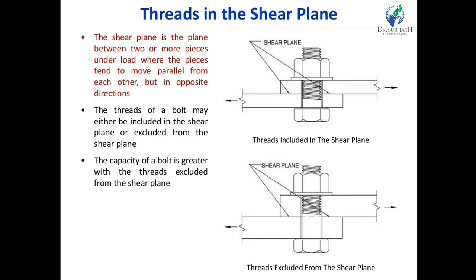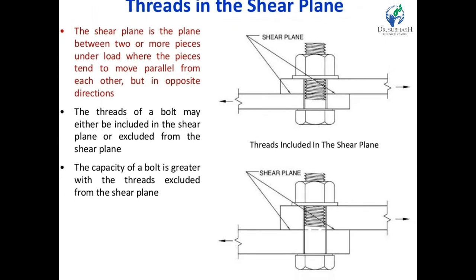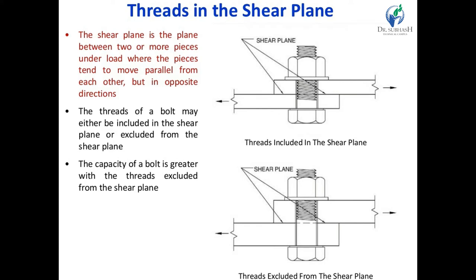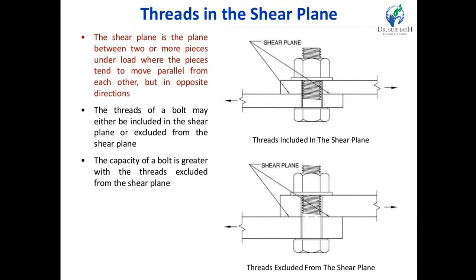We can observe thread in a shear plane. The shear plane is between two or more pieces under load, where the pieces tend to move parallel to each other but in opposite directions. The threaded part of the bolt may either include the shear plane or be excluded from the shear plane. The capacity of the bolt is greater with thread. From the previous video session, we saw the planes of a bolt — there are mainly two planes: threaded area and shank area.